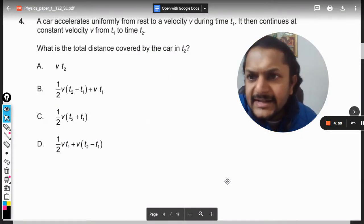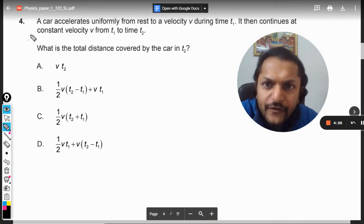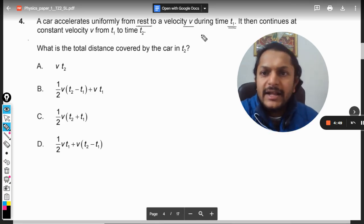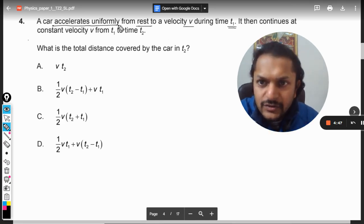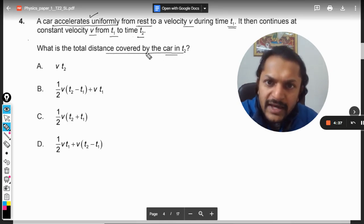Okay dear students, let's see what is there in this question. A car accelerates uniformly from rest to a velocity V during the time t1, and there is uniform acceleration. It then continues at constant velocity V from t1 to t2. What is the total distance covered by the car in t2 time period?